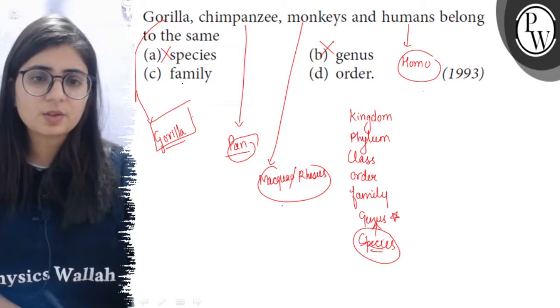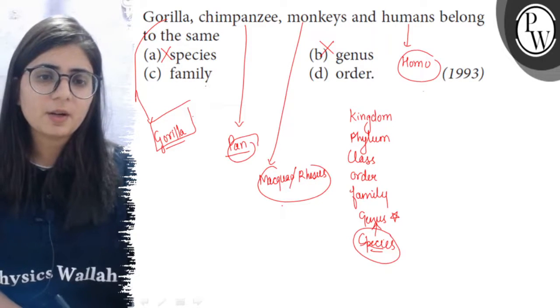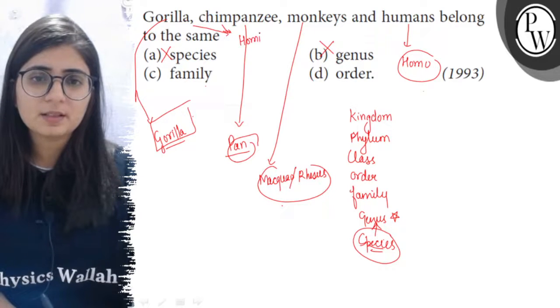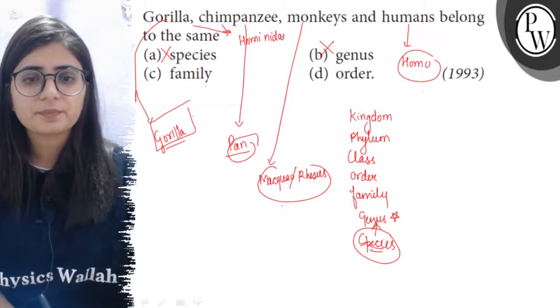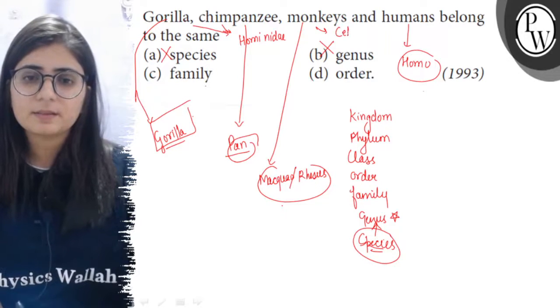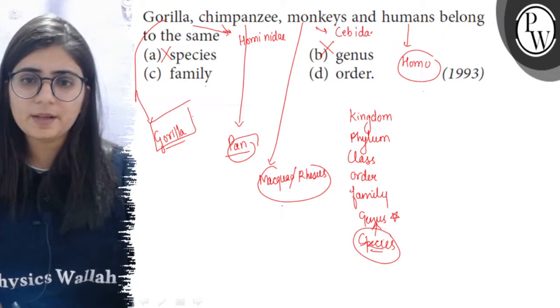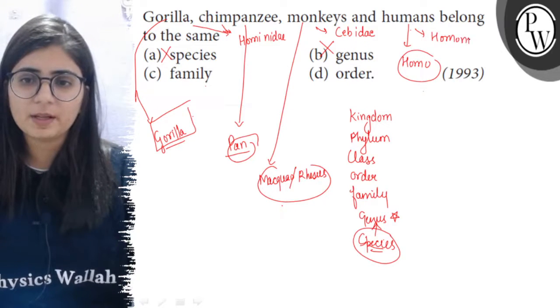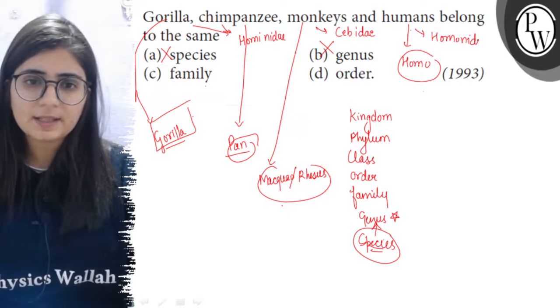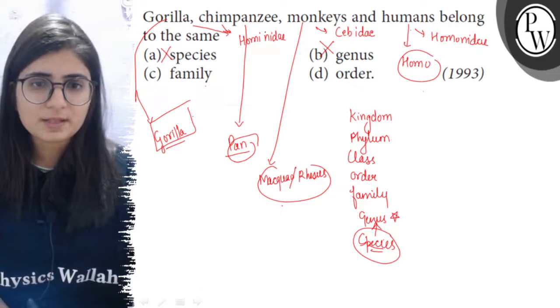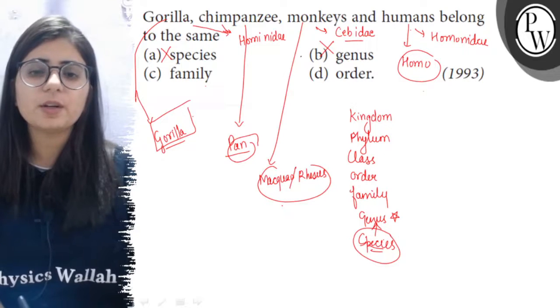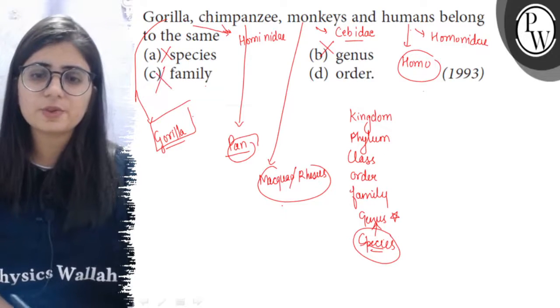Now comes family. Their families are different because Gorilla and Chimpanzee belong to family Hominidae. Monkeys belong to family Cercopithecidae, while human beings also belong to Hominidae. Three of these share a common family, but monkeys belong to a different family, so family is also discarded.